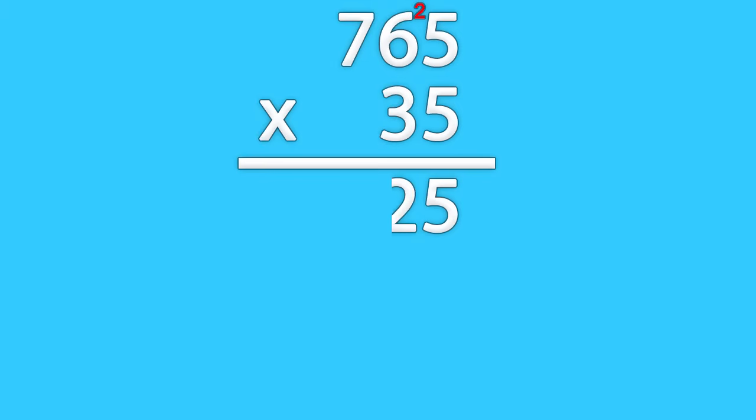You write down the two and carry the three, and then you multiply one last time, and you write down the full number, since that's the end of this round of multiplication. Then you leave a space and do it all over again.